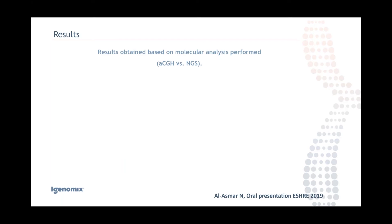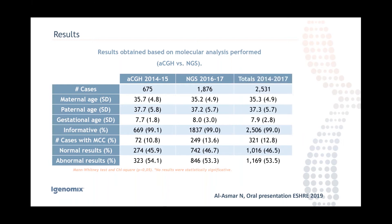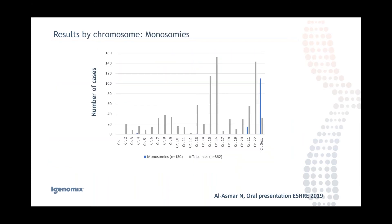Now for the results. We found no statistical differences between array CGH and NGS, so I'll present the combined results. The informative results rate was 99%, which is really important for providing better counseling to patients after a miscarriage. I should note that around 13% of cases showed only maternal cells across all three samples, so we had to report maternal cell contamination for those. The percentage of abnormal results was 53%.